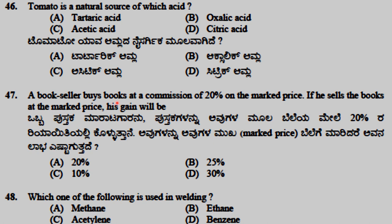A bookseller buys a book at a commission of 20% on the market price. If he sells the book at the market price, his gain will be 25%. Acetylene is used in welding.